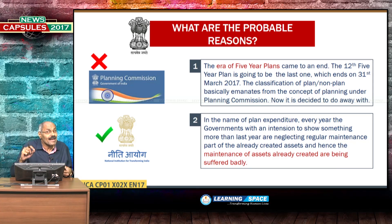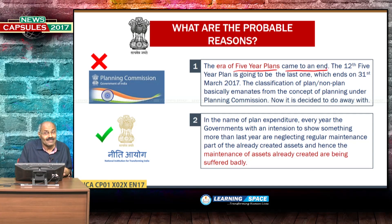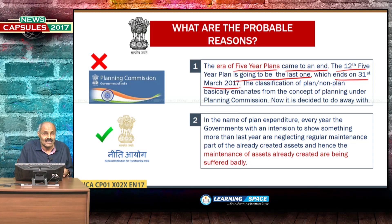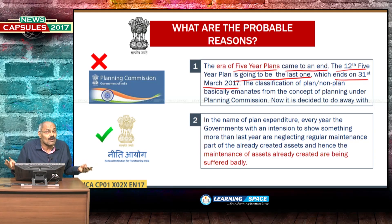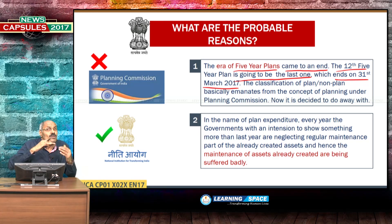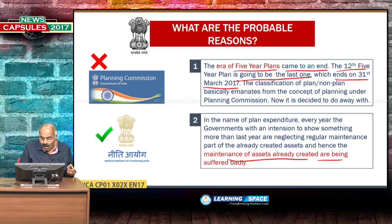The first and foremost reason is that the era of 5-year plans is coming to an end. The 12th 5-year plan is the last one, ending on 31st March 2017. The classification of plan non-plan basically emanates from the concept of planning under the Planning Commission, so there is no need for this bifurcation. The second point is that in the name of plan expenditure, every year governments concentrate on showing more than last year, and in that process, maintenance of already-created assets suffers badly.